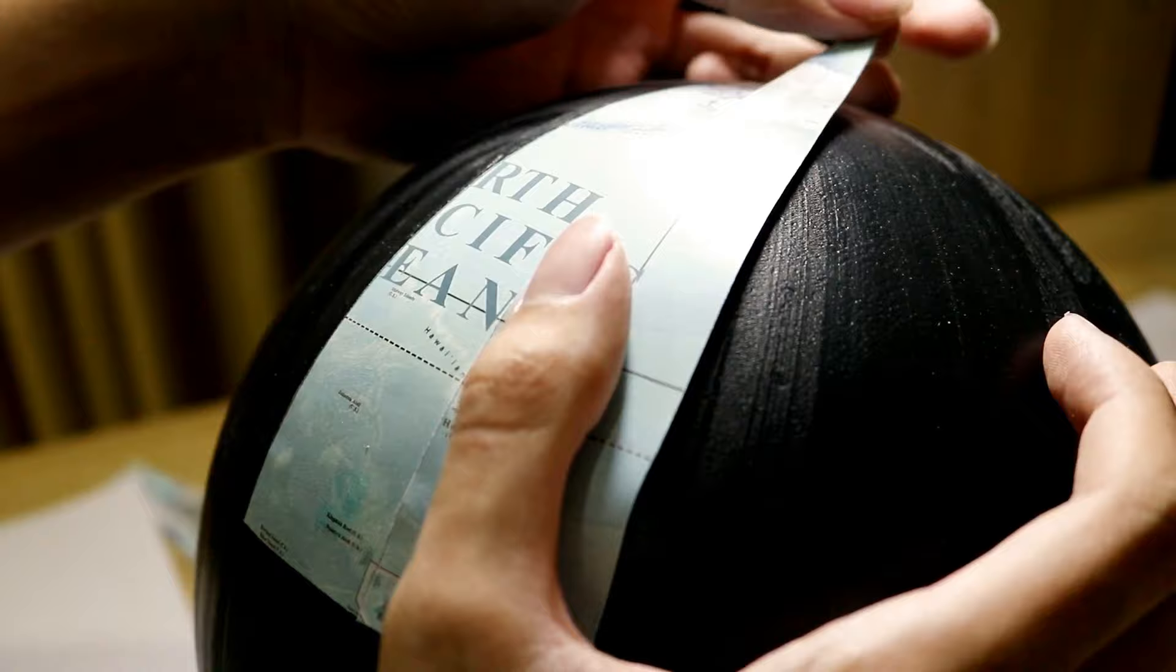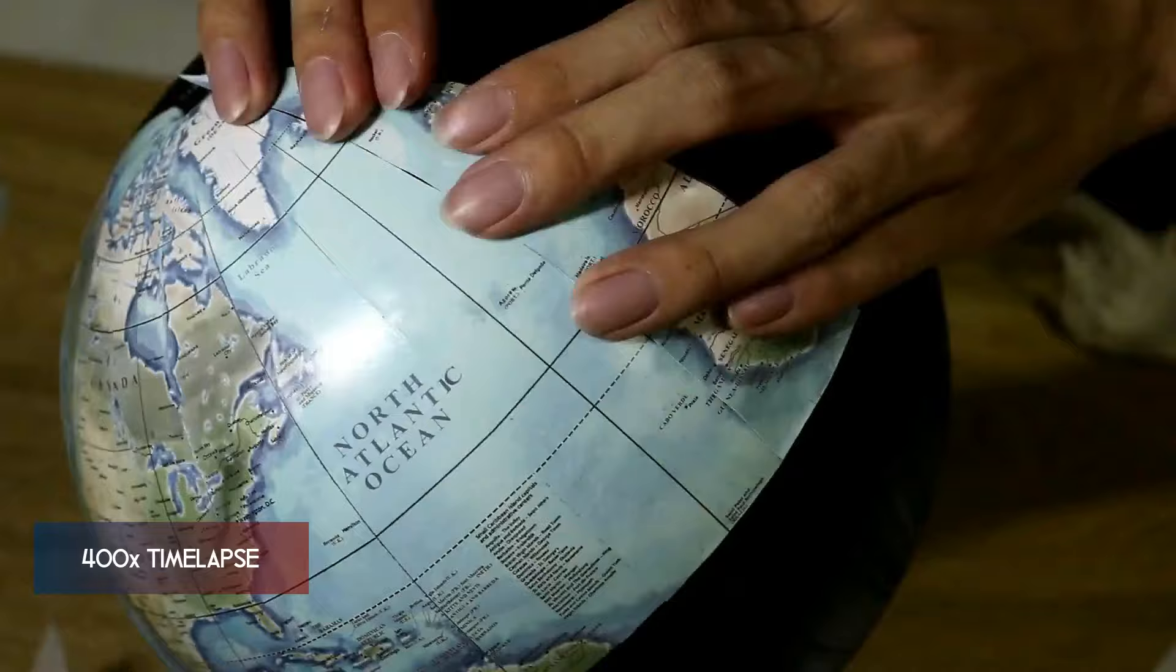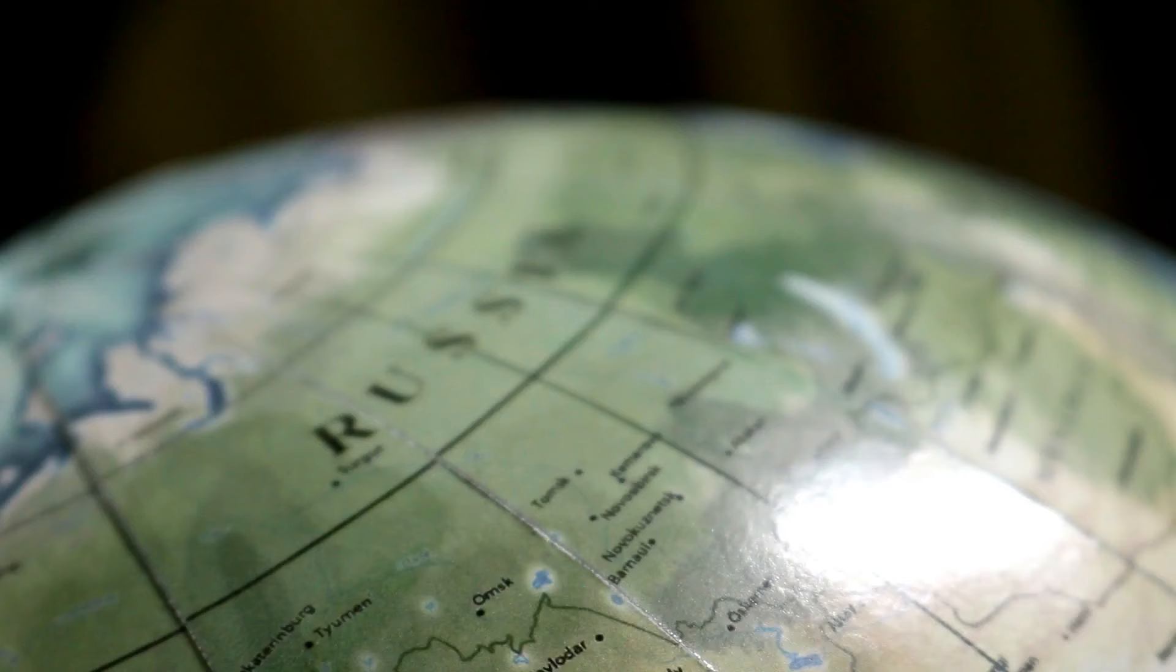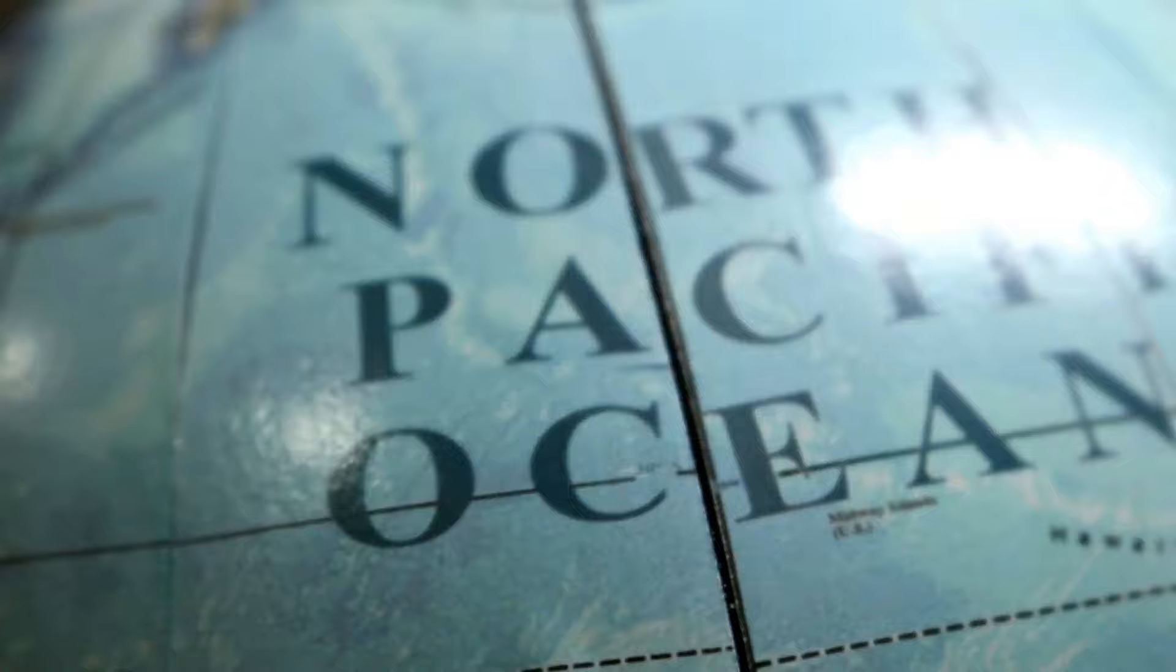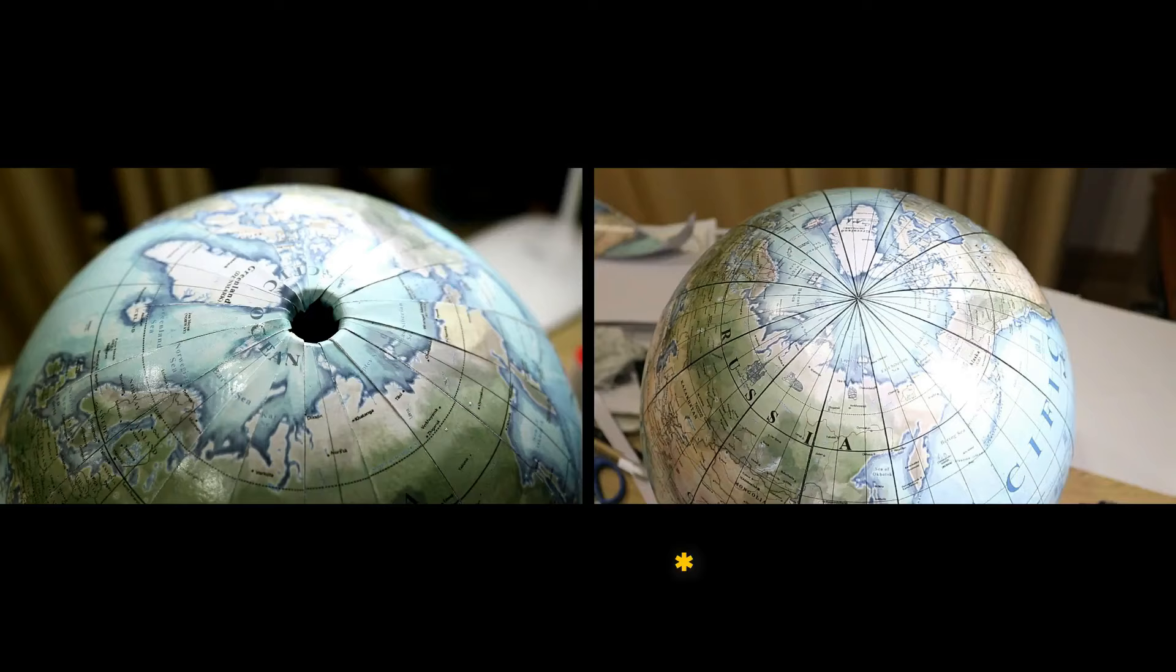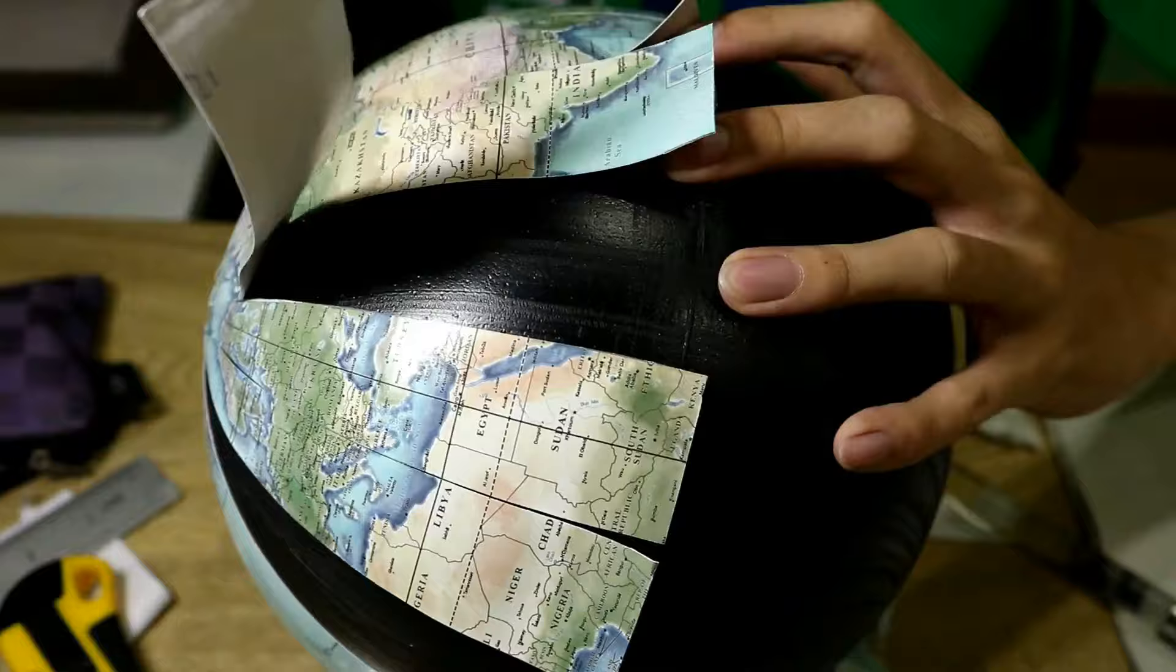So what I'm doing now is the hardest part, which is applying the gores onto the sphere. I'm gonna explain more on the technique later on the successful attempt, because this is fail number 1. After I finished, you can see that the latitude lines of each gore didn't line up properly. The equator was a mess. Also, I realized that the longitude lines converge at the pole looked messy.